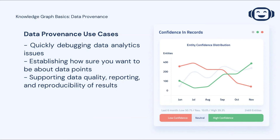What is provenance used for? Simply put, provenance greatly simplifies the process of looking into root causes of data analytics issues. It also enables you to specify how sure you want to be of your data points in a given analysis. Additionally, provenance is important for data quality, reporting, and the reproducibility of results.